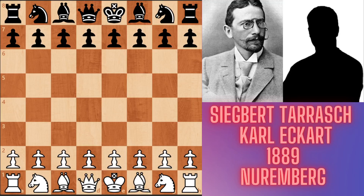Hello dear chess lovers! Today I am going to show you a chess game between Siegbert Tarrasch and Karl Eckhart, played in the 1889 Nuremberg chess tournament. This game is the first example of the French Defense Tarrasch variation in chess history.